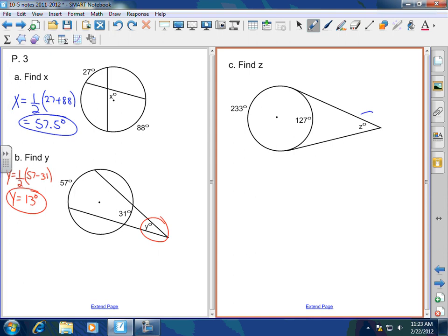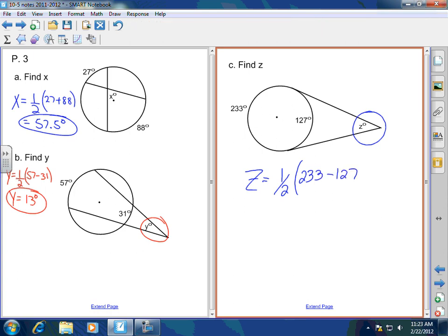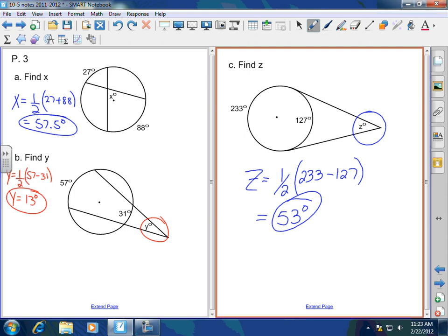How would we find angle Z here? Angle Z would equal? One-half of 233 minus 127, and that's going to equal 53. Very good. Because if the difference is 106 divided by 2, angle Z would be 53 degrees. Good?